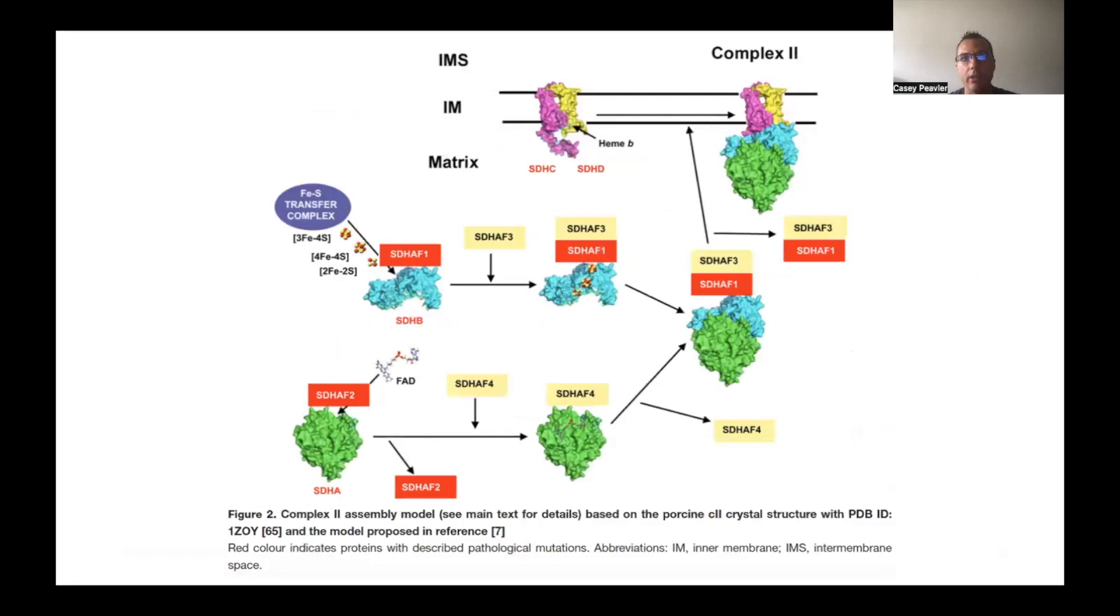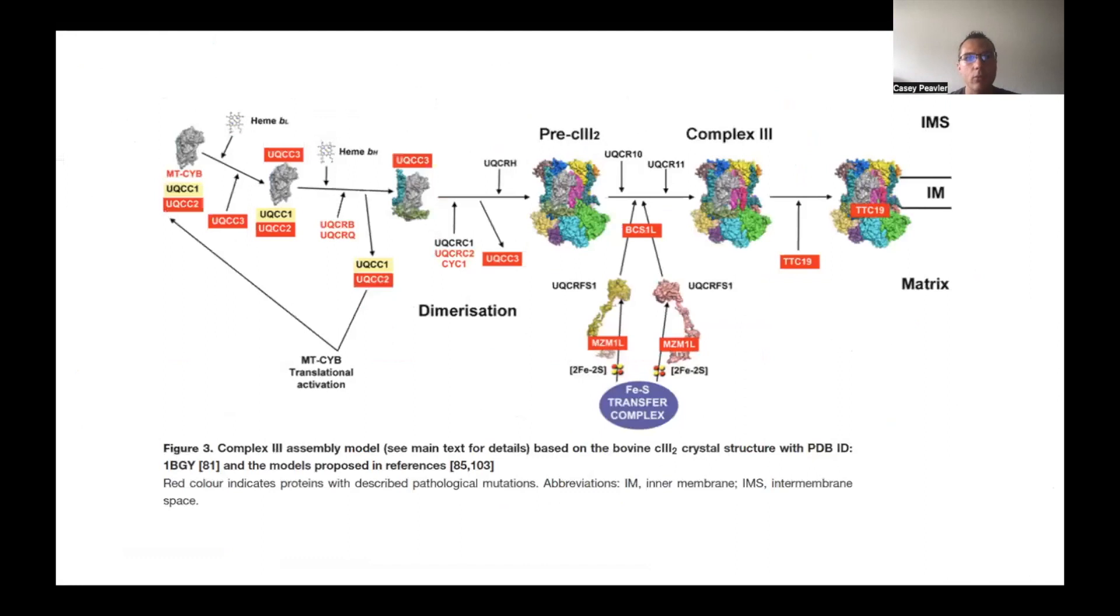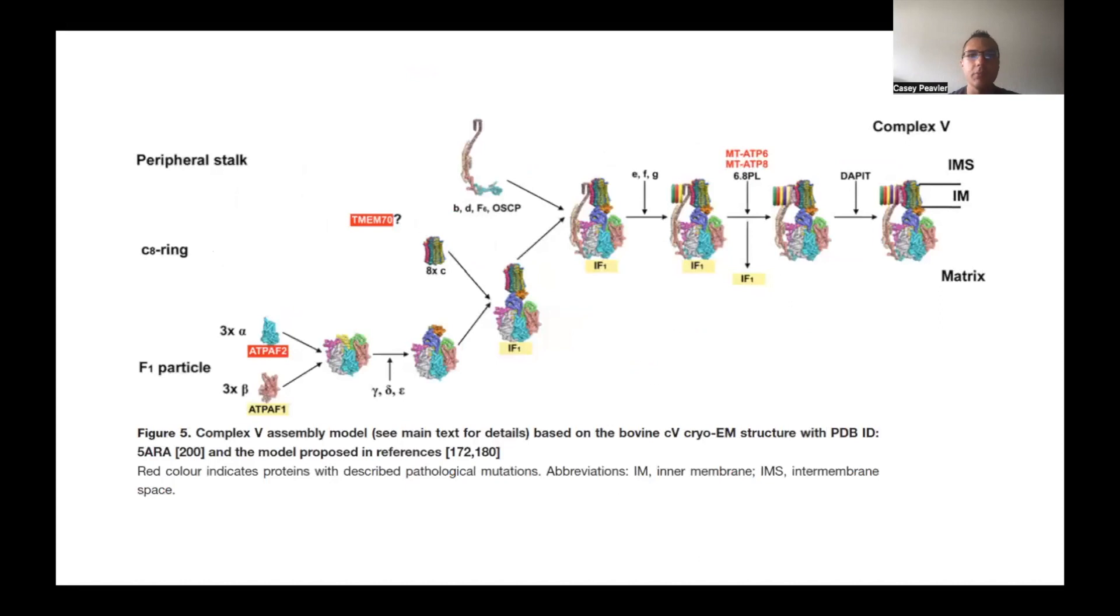This is a picture of complex two, how it comes together. It seems to be much more simple in terms of the structure compared to complex one. And then we have CoQ, or CoQ10 as it's colloquially known in the supplement literature, but this is, you see how it's in the middle of everything, and many different molecules work through CoQ. And we'll talk about CoQ in detail later on, but this is just a general overview of CoQ, how it's formed through biosynthesis of CoQ. And then we have complex three, how different proteins and molecules come together to form complex three. And then later we have complex four, and then we have the ATPase, which again is multiple subunits. It's a large complex.